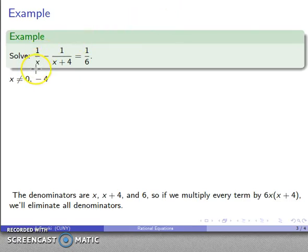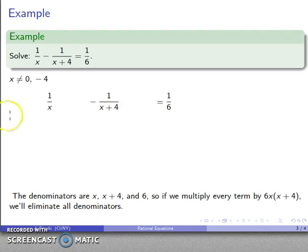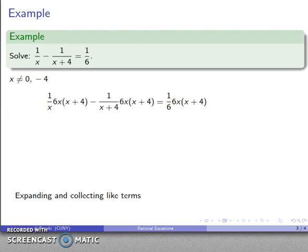So now our denominators are x, x plus 4, and 6. So if I multiply every term by their product, 6x times x plus 4, I'll eliminate all of the denominators. So I'll do that. Here's my original equation. I'll multiply everything by 6x times x plus 4, and I can cancel factors out. This denominator x will cancel with that, x plus 4, 6 will cancel, and I'll end up with 6 times x plus 4, 6x times 1, 1 times x times x plus 4, and I'll end up with a new equation.